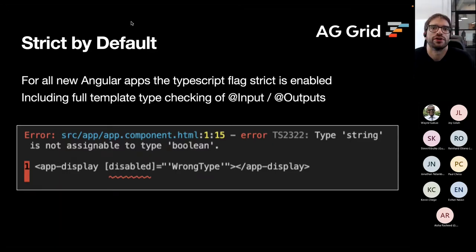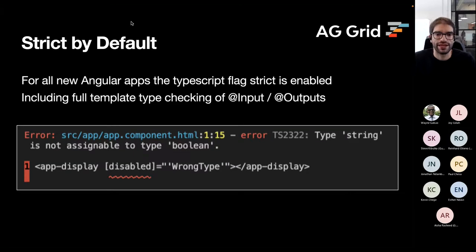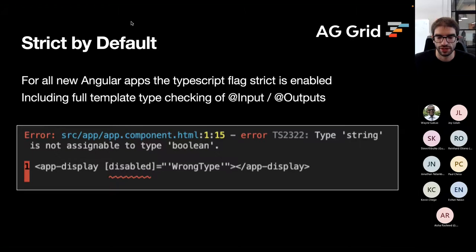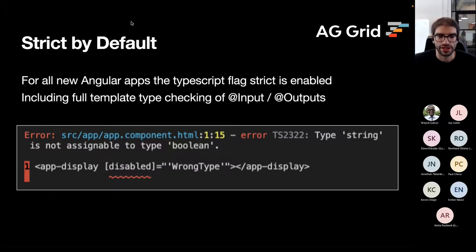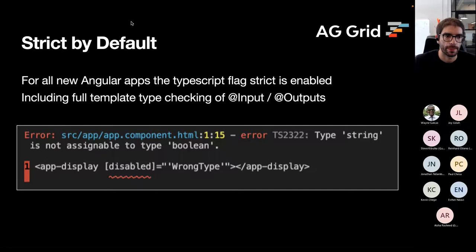By default, all new Angular applications come with template checking and strict mode turned on. What that enables your IDE — say Visual Studio Code or IntelliJ — to do is show those red squiggly lines and warn you about types being wrong. For example, here we're trying to pass a string into something which we think is a boolean.